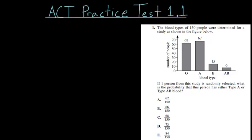The first problem of this first ACT practice test focuses on a type of probability question. The blood types of 150 people were determined for a study as shown in the figure below. If one person from this study is randomly selected, what is the probability that this person has either type A or type AB blood?